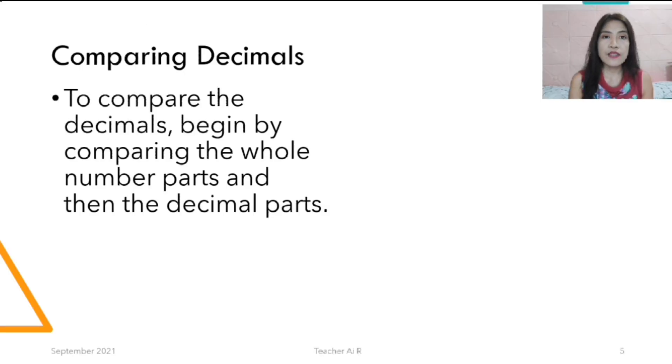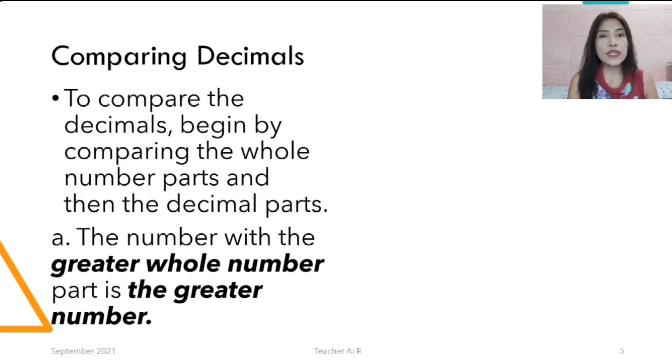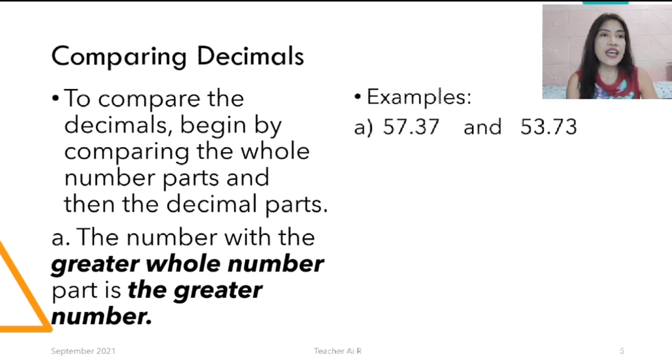Let's go! So, let's have this comparing decimals. To compare the decimals, let us begin by comparing the whole number parts and then followed by the decimal. The whole number with the greater whole number part is the greater number. For example, we have 57.37 and 53.73. Which one is bigger? Is it 57 or 53? The bigger number is the whole number 57. So when you compare it, it would be 57.37 is greater than 53.73.